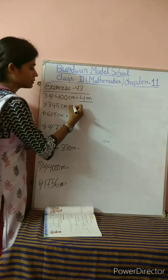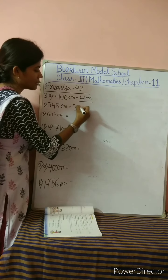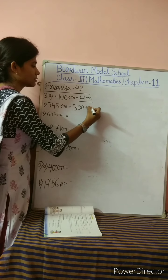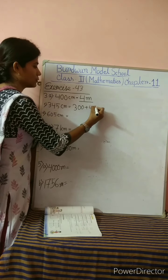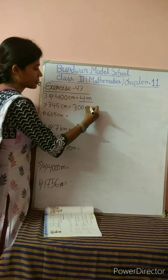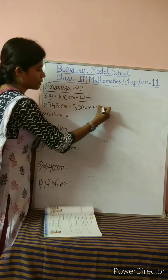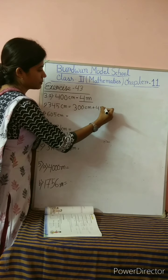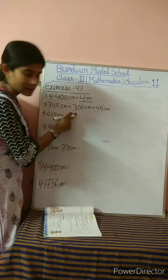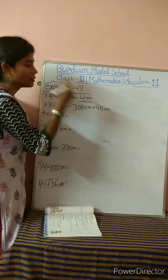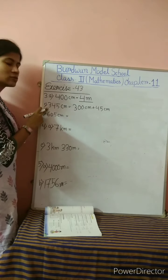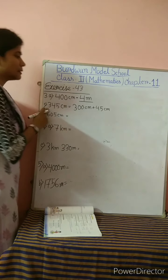See the number 3 instruction: Convert the following into meters and centimeters. That means in number 3, all the values are given in centimeters and you have to convert them to meters and centimeters.